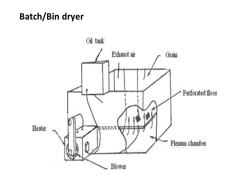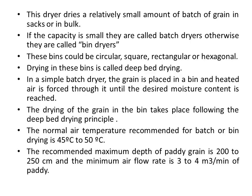The second type is the batch or bin dryer — small-capacity containers into which grains are placed in bulk. A blower and heater are installed at one end; the heater warms the air blown by the blower, and that heated air circulates inside the container to dry the grains. This method is not as effective as the sack drying method because the grains are placed in bulk. The recommended air temperature is 45 to 50°C, the recommended maximum depth for paddy grain is 200 to 250 centimeters, and the minimum airflow rate is 3 to 4 cubic meters per minute for a batch of paddy.